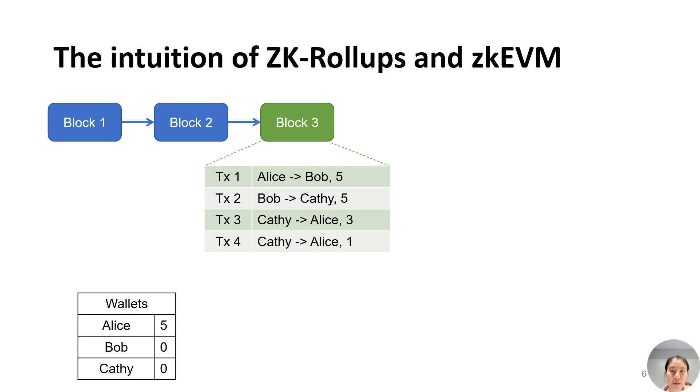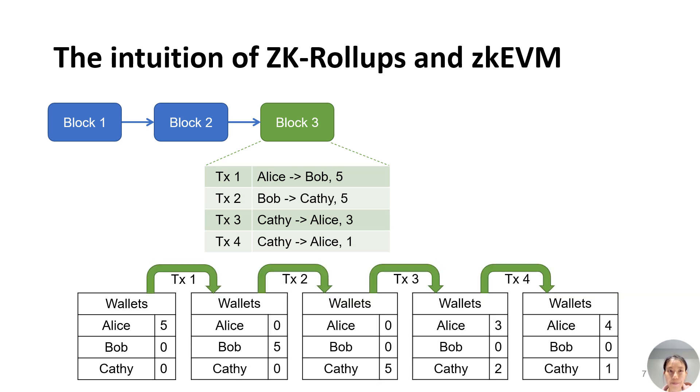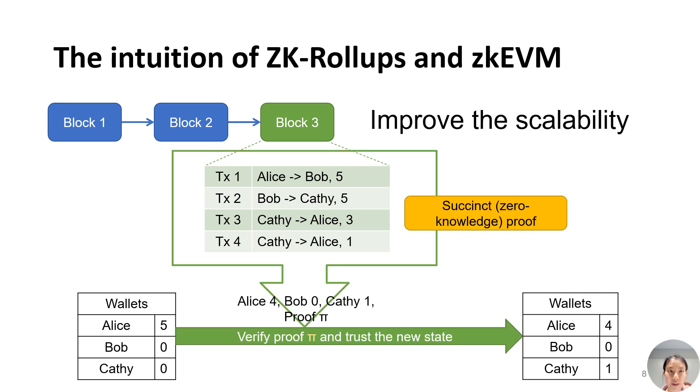One of the most popular applications of succinct zero-knowledge proof is ZK-Rollups and zkEVM on blockchain. In blockchain, each block consists of a list of transactions, and each user stores the valid state locally. Every time a new block is added to the chain, all users execute the transactions in the block to synchronize their valid state.